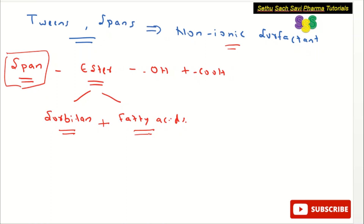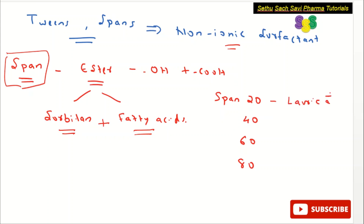There are different types of spans: span 20, span 40, span 60, and span 80. The difference in this number is based on which fatty acid is used. If it is 20, the fatty acid will be lauric acid. If it is 40, the fatty acid will be palmitic acid. If the number is 60, the fatty acid will be stearic acid. And if the number is 80, the fatty acid will be oleic acid.